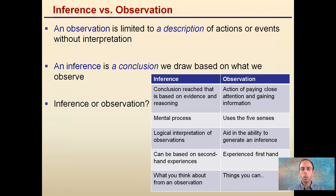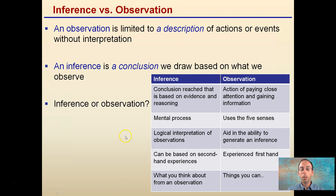You should probably explain what each is. An observation is limited to a description of actions or events without interpretation. The key part there is without interpretation. In contrast to that, an inference is a conclusion we draw based on what we observe. So you may be asked: is something an inference or an observation?